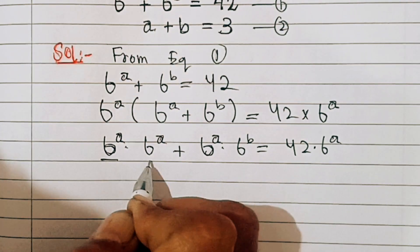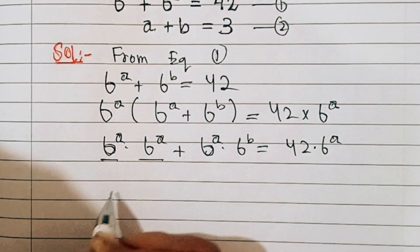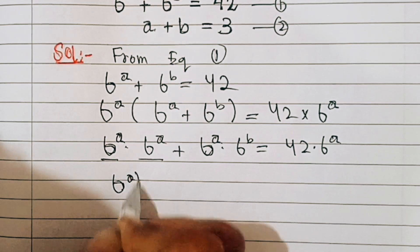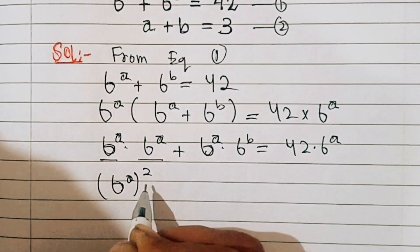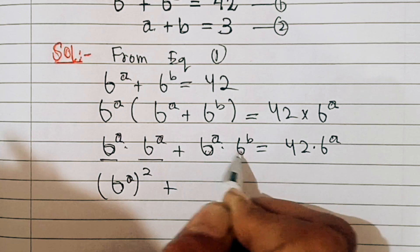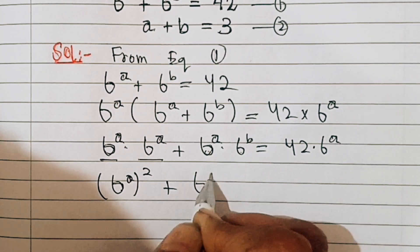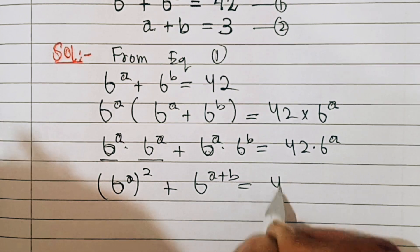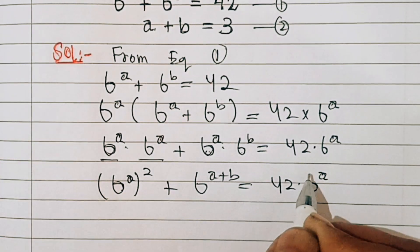Now, 6 power a multiplied by 6 power a is 6 power a whole square. And for the next term, since the bases are the same, the powers get added. So this becomes 6 power a whole square plus 6 power (a plus b) equals 42 times 6 power a.